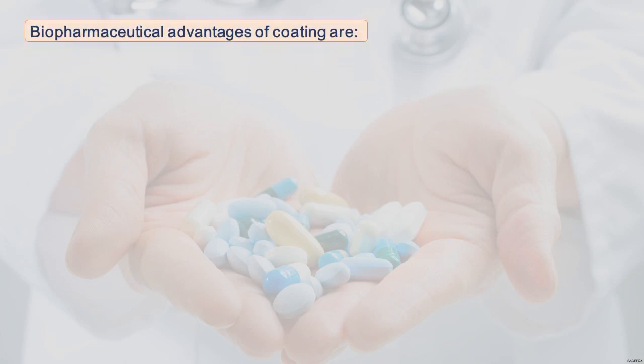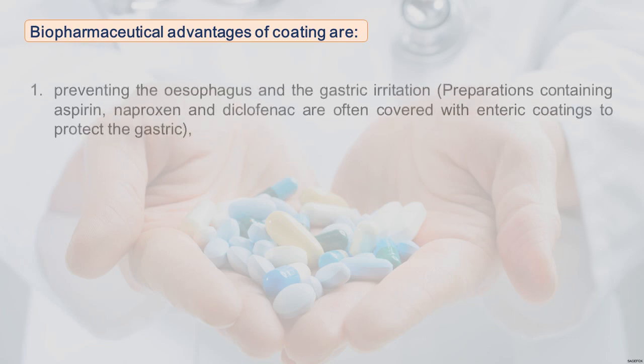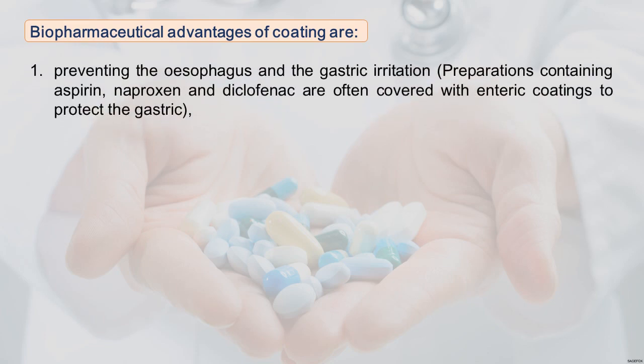The gastrointestinal tract is approximately 8 to 9 meters long with a series of muscular organs lined with mucous membrane. For perfect digestion, the residence time of food in different GI tract sections, the pH level, and enzyme composition vary across sections. This change in pH has a significant influence on drug release, drug stability, and absorption of active ingredients.